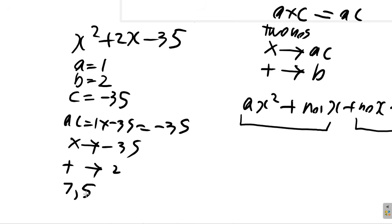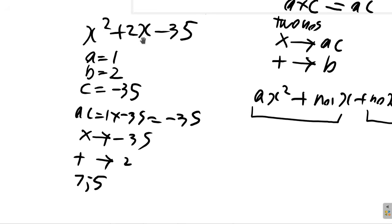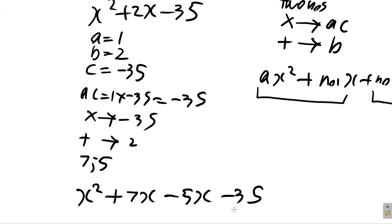I'm thinking of 7 and 5. They should give negative 35: 7 times negative 5 is negative 35, and 7 plus negative 5 is positive 2 — yes, that's correct. If instead you made the 7 negative: negative 7 times 5 is negative 35, but negative 7 plus 5 would be negative 2, so you'd have to make the 5 negative. So the two numbers are 7 and negative 5.